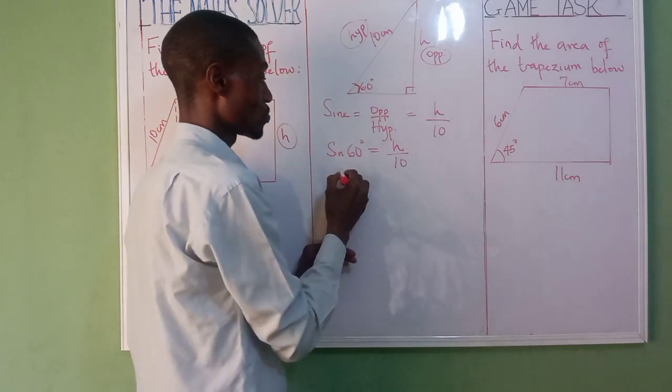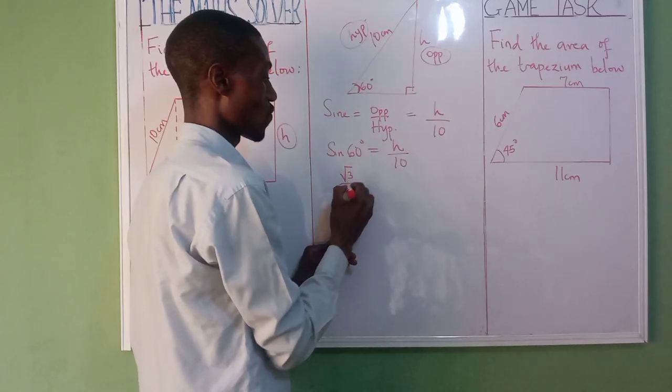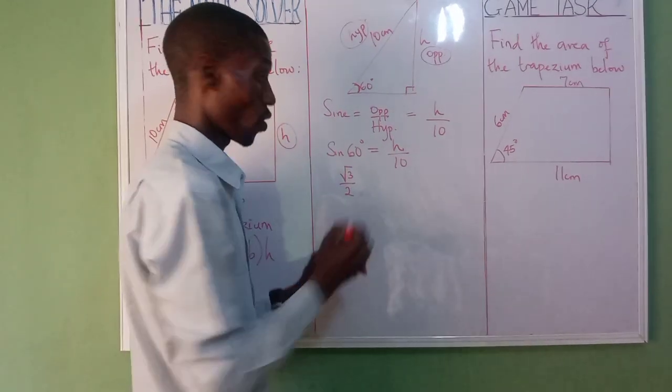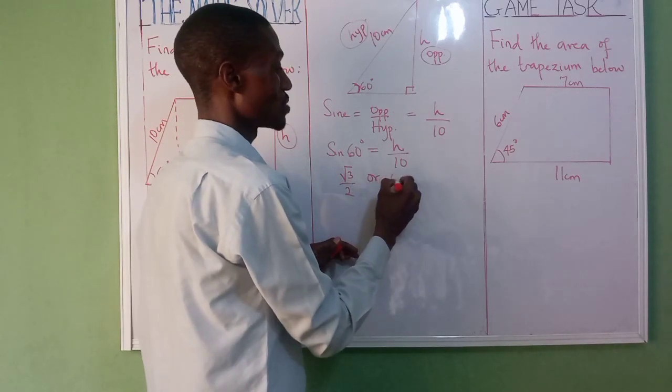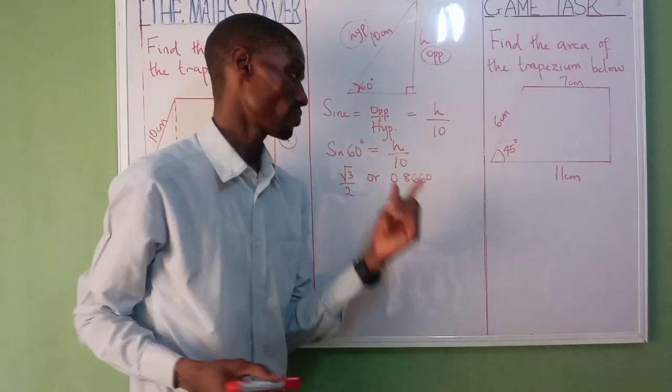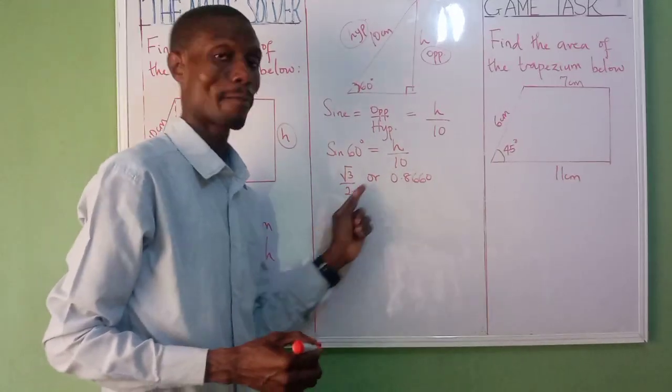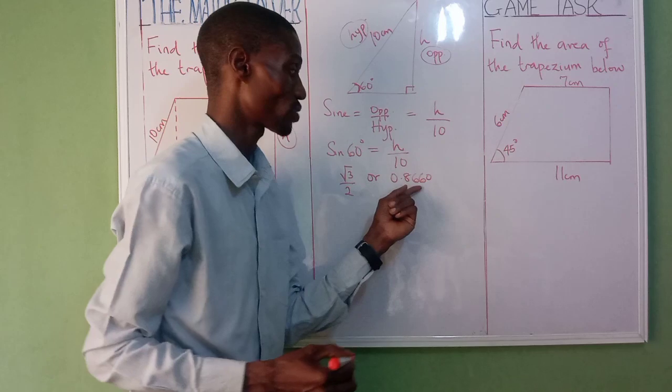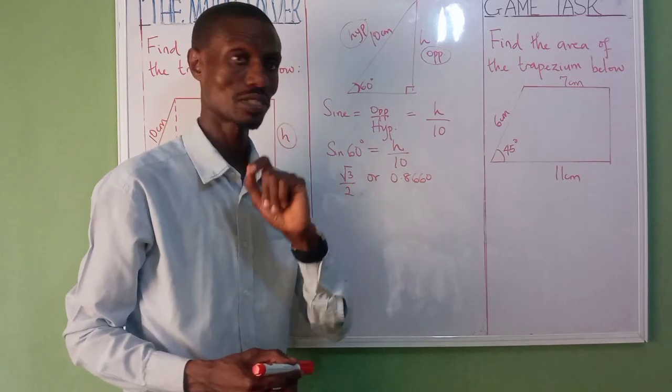Straightforward, that's going to be root 3 over 2, or it's going to be 0.8660. This is in short form, but normally using your four-figure table you are going to get this: 0.8660.